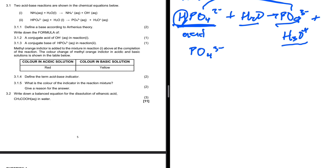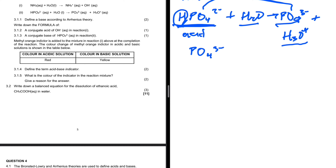Question 3.1.4: methyl orange indicator is added to the mixture in reaction 1 after completion. The color in acidic solution is red and in basic solution is yellow. Define the term acid-base indicator: it is a weak acid or weak base which changes color as the hydrogen ion concentration or OH⁻ ion concentration in a solution changes.